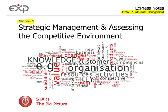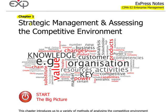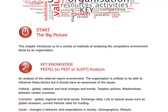Chapter 1: Strategic Management and Assessing the Competitive Environment. Let's go down to the big picture and see what this is all about. As it says here, this chapter introduces us to a variety of methods of analysing the competitive environment faced by an organisation. In other words, it helps us identify what environment an organisation is operating in, and this can be used to help identify potential ways forward in terms of their strategy.